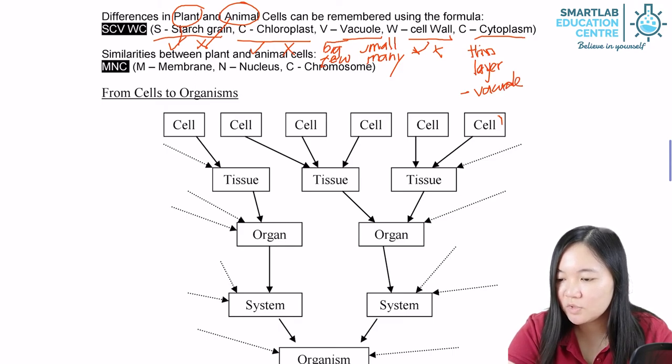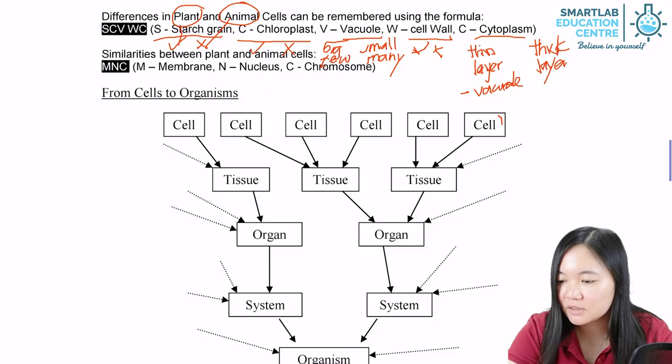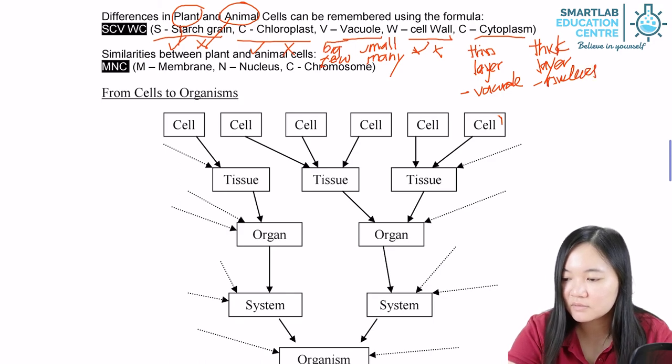What about animal? Animal have thick layer. A thick layer surrounding the nucleus. The nucleus is in the middle.